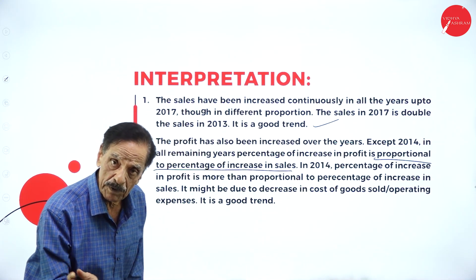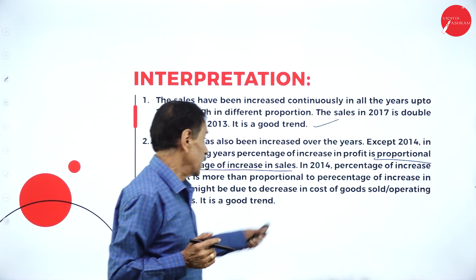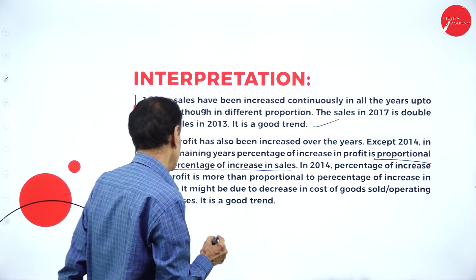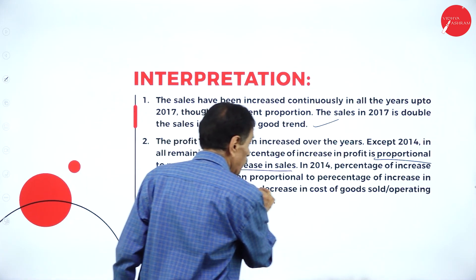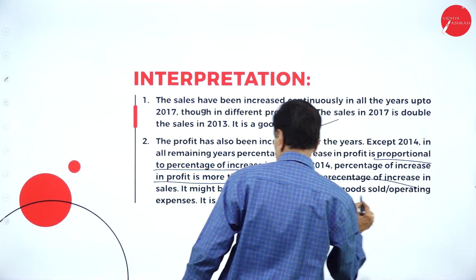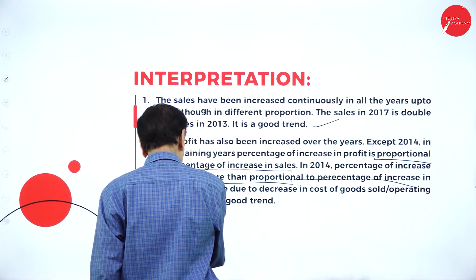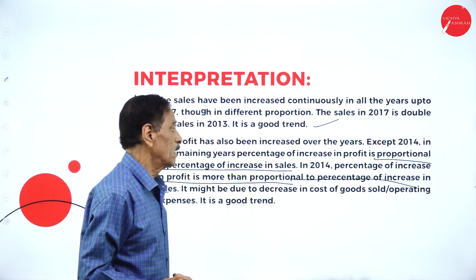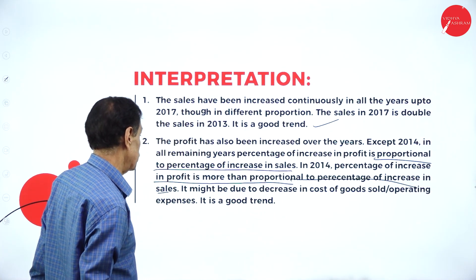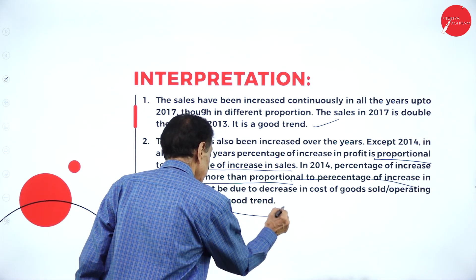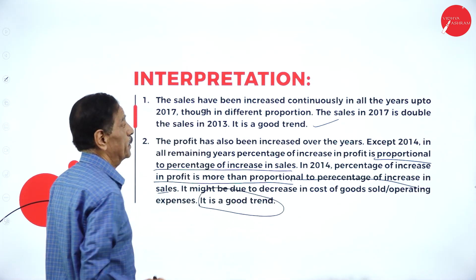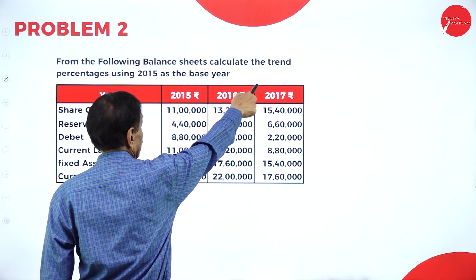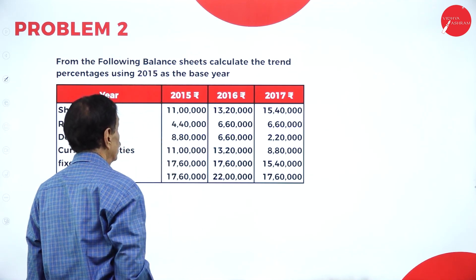Except in 2014, in all remaining years the percentage increase in profit is proportional to the percentage increase in sales — as sales increase, profit percentage also increases. In 2014, the percentage increase in profit is more than the proportionate percentage increase in sales, which might be due to a decrease in cost of goods sold or operating expenses. It is a good trend.